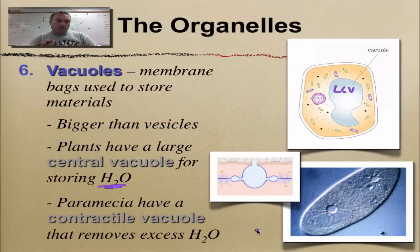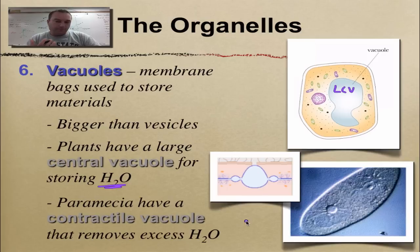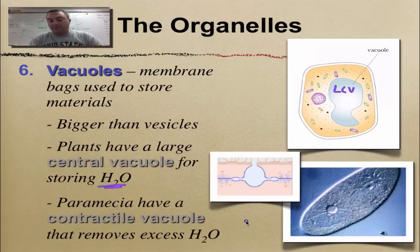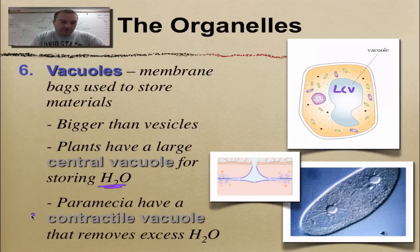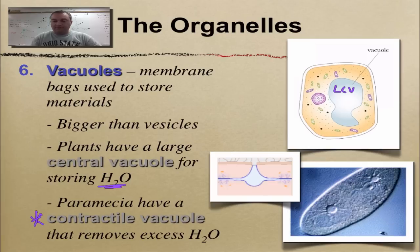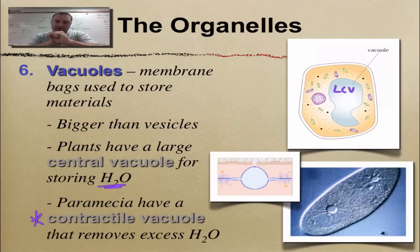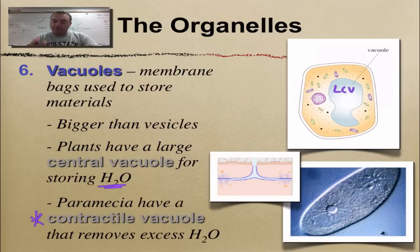Freshwater creatures like paramecia — a one-celled structure that lives in pond water — have a problem: water is always flowing in. Think of a boat: no matter how good a boat is, water always gets in, so you need a bilge pump to pump it out. Paramecia have a bilge pump called a contractile vacuole. As water moves in it needs to be pumped out — the vacuole contracts, squeezing out the water. If the water keeps moving in, the paramecia would burst. Vacuoles are used to store bulk materials like water, and contractile vacuoles squeeze it out.